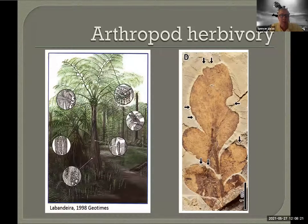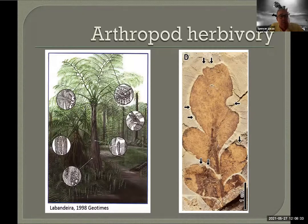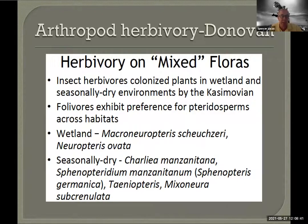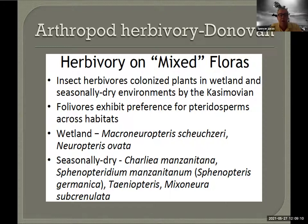Mike Donovan talked about arthropod herbivory — insects chewing on leaves and things like that — and there's a diverse record of that, though not as good as we really need to see patterns. By Casimovian time it was clear there were mixed floras — both wet-adapted plants and dry plants growing together on the same landscape — and arthropods were feeding on these mixed floras. The question is when did that really first appear and how did it first develop?